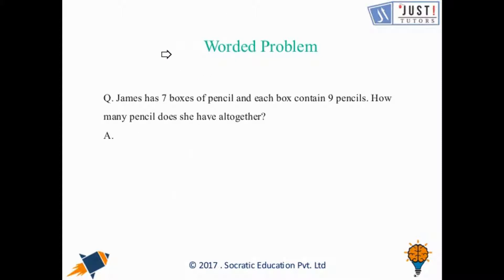Now let's just try one worded problem based on multiplication. Let's read it out. James has 7 boxes of pencil and each box contains 9 pencils. How many pencils does she have all together? Here we need to tell the total number of pencils she's having. So what all we can do is multiplying 7 times 9 and we get that to be as 63. That means overall she's having 63 pencils.